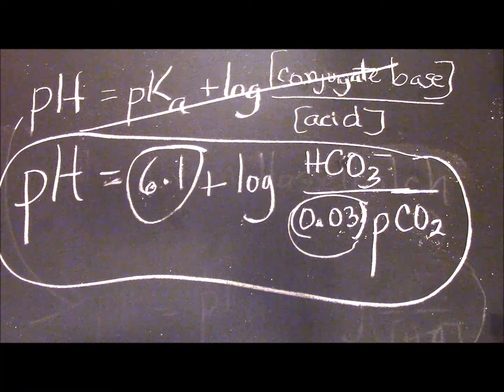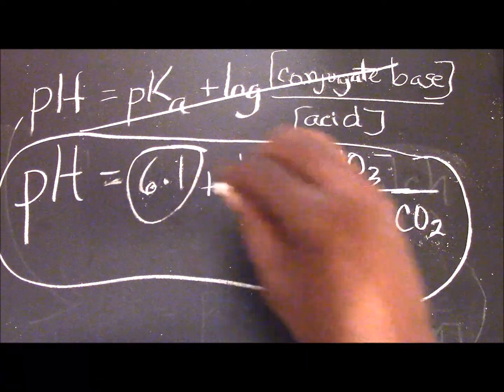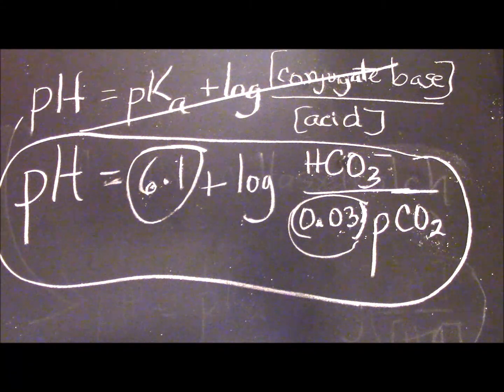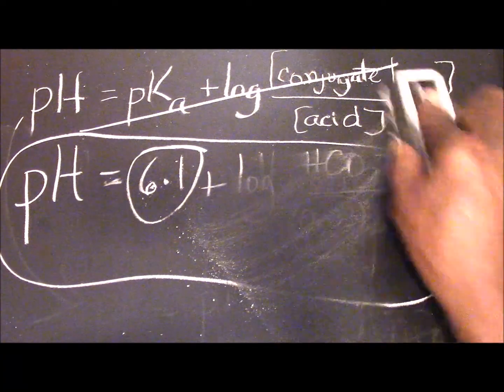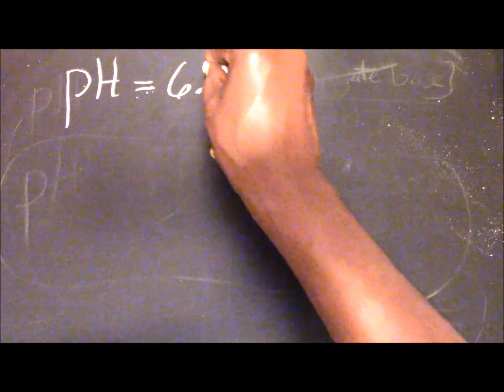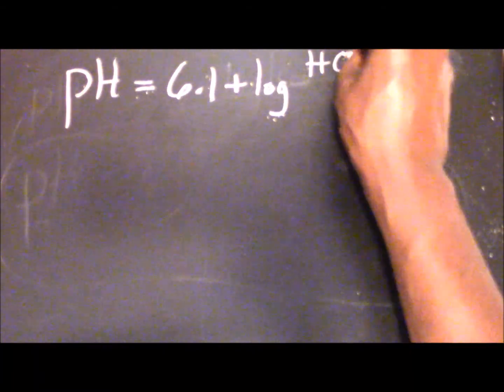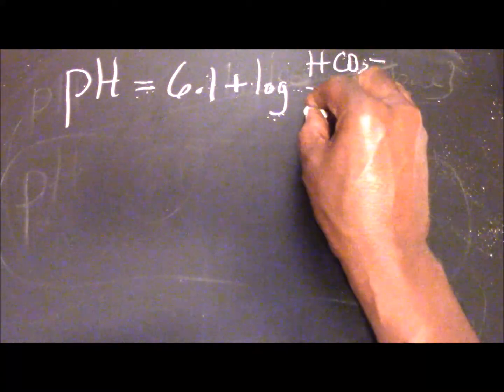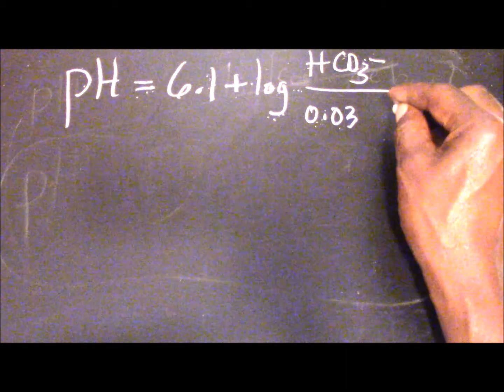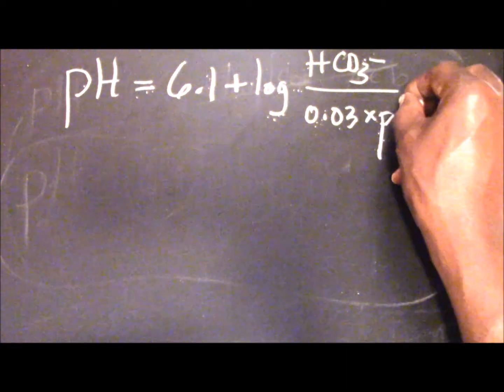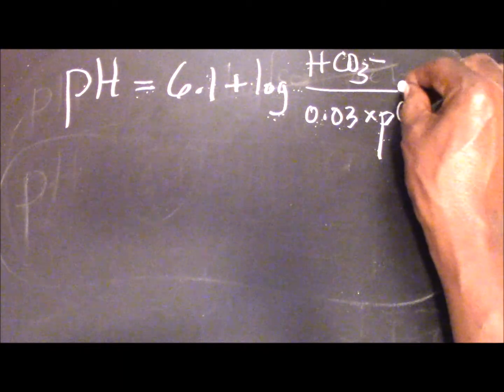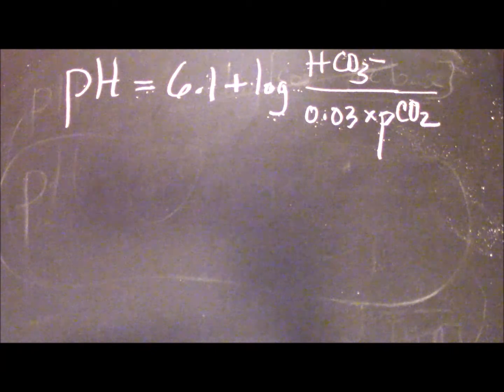Now with that in mind, what we need to know is how to use this equation to do simple calculations. They are not complicated, and so we will attempt to do just that. Let's write the formula again. The pH is given by 6.1 plus the logarithm of the bicarbonate ion divided by 0.03 multiplied by the partial pressure of carbon dioxide.